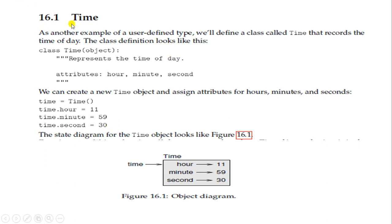Last time, if you remember the previous video, we created a user-defined type that was Rectangle. So this time we are doing a user-defined type that is Time. As another example of a user-defined type, we will define a class called Time that records the time of a day.